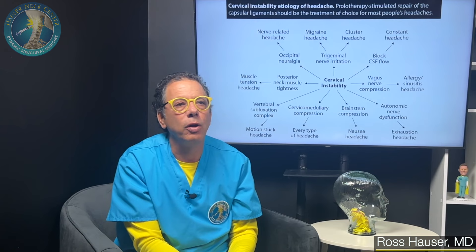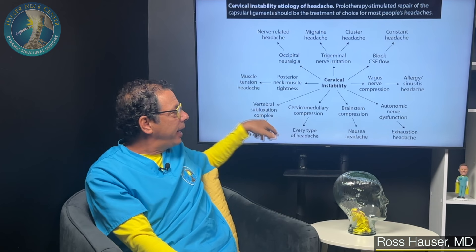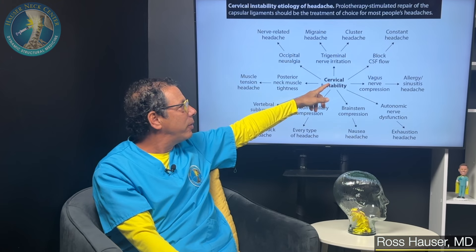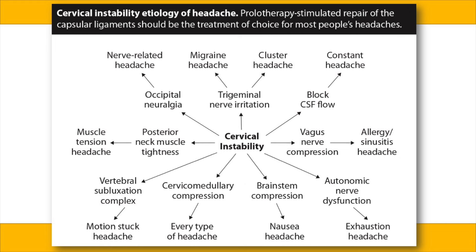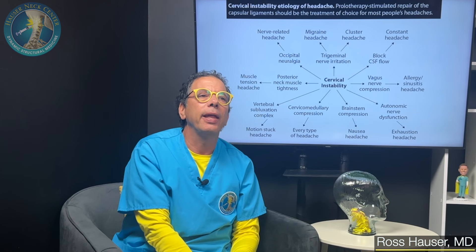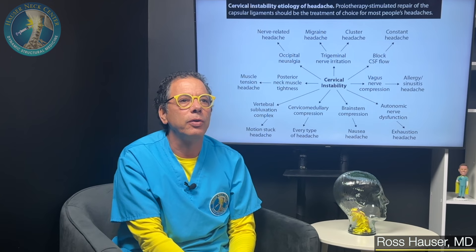Look at the various headaches that could be caused by ligamentous cervical instability. If someone has migraine or cluster headaches, researching the pathophysiology shows it's stimulation of the trigeminal nerve. What can affect the trigeminal nerve? Following Hauser's Law, that again leads to ligamentous cervical instability.